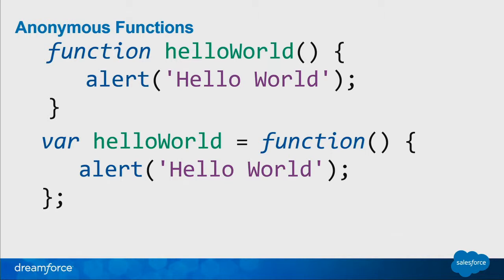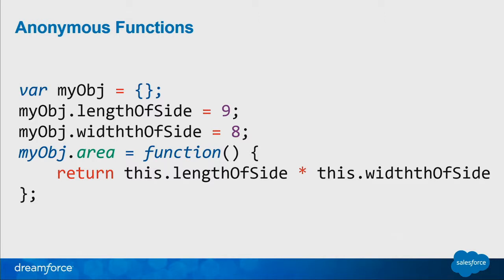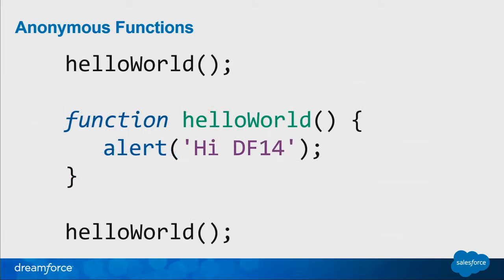The difference here is that the function itself doesn't have a name. The actual value of hello world is the function itself. So if you give the hello world variable another value, the unnamed function — the anonymous function — will actually go away and will never be recovered again. You can also assign a property of an object to a function; that function doesn't have a name. One big difference between named functions and anonymous functions is that you can reference a named function anywhere within the same scope where the function itself has been defined.